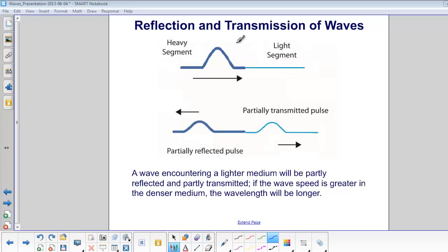When a wave pulse moves from a dense medium to a less dense medium, it will be partially transmitted and partially reflected. But both pulses will be upright.